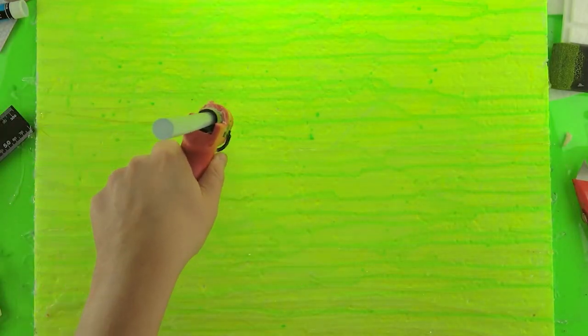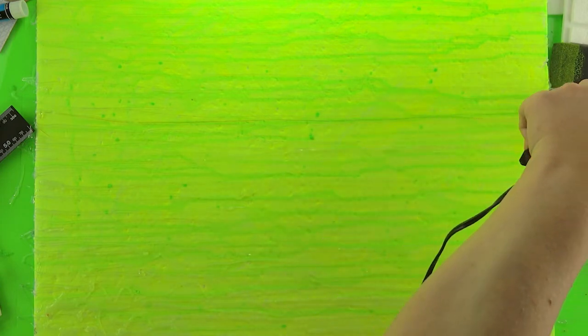And once all that's dry, I'm going to add some lines of hot glue to kind of give it a little bit of dimension, to kind of give it some depth and some translucency.